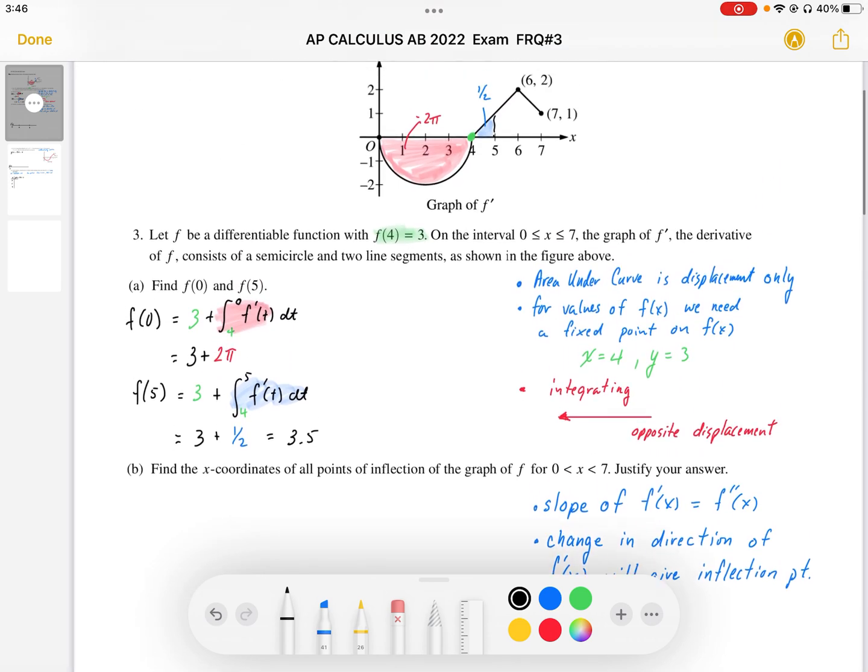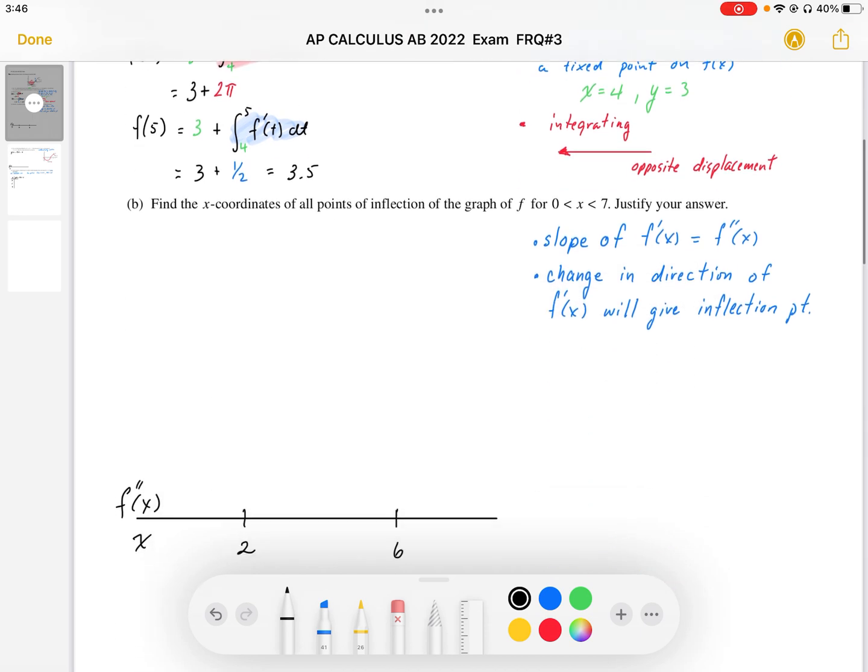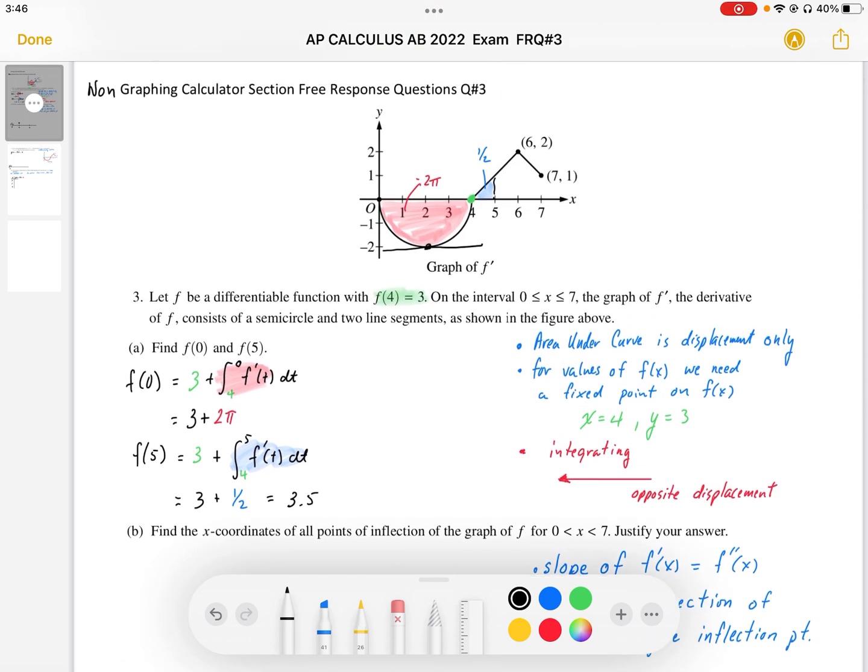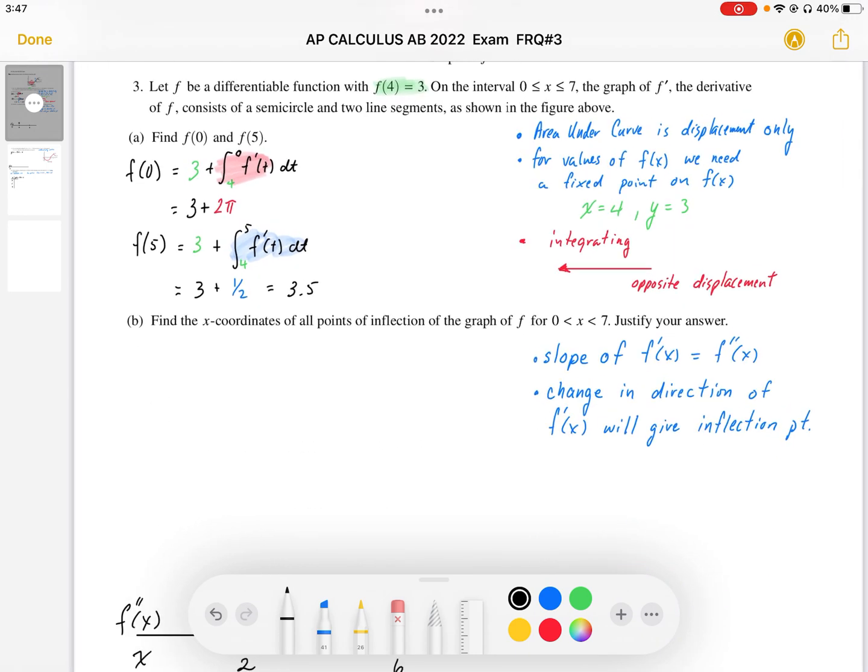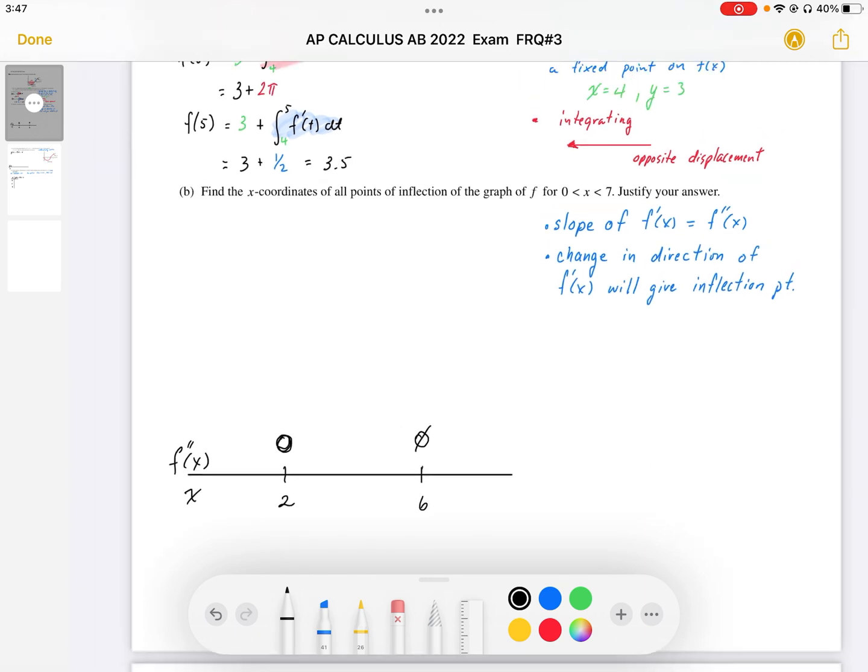Change in direction, if I take a look at this graph, is going to happen right at the bottom here where I have a horizontal tangent. So my second derivative is going to be equal to 0. We also have a change in direction going from positive slope to negative slope at x equals 6. So that's another potential change in concavity.